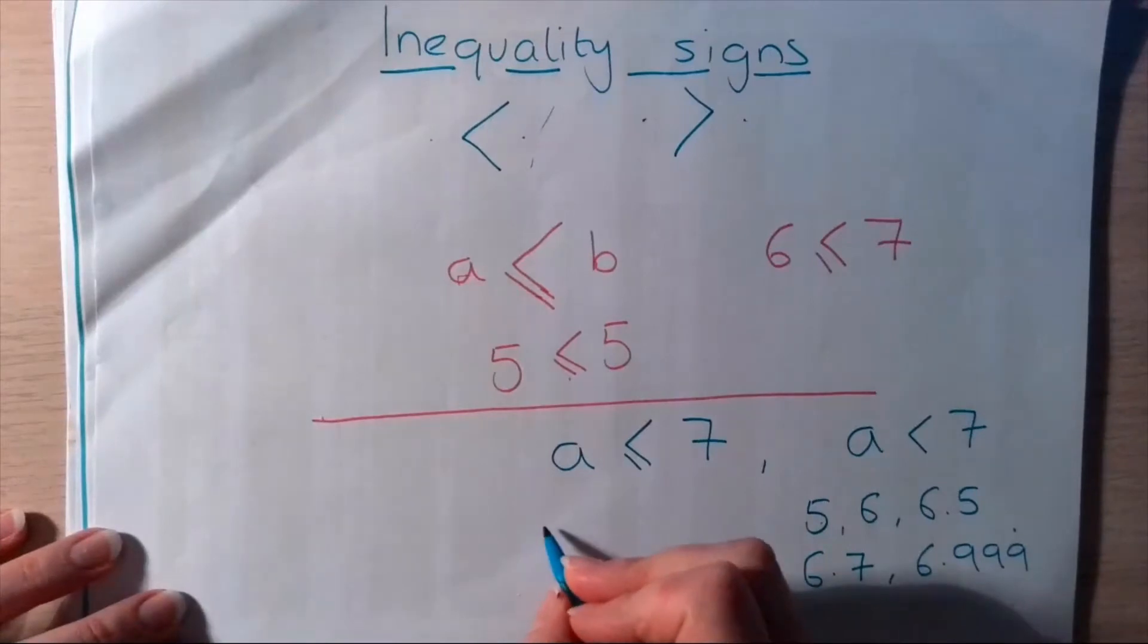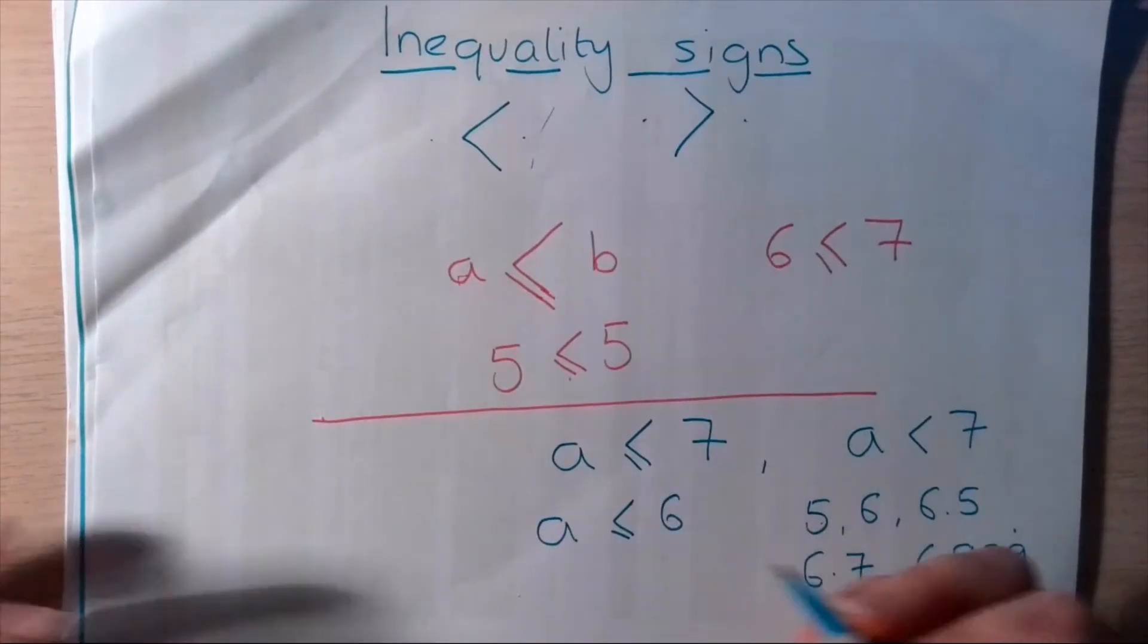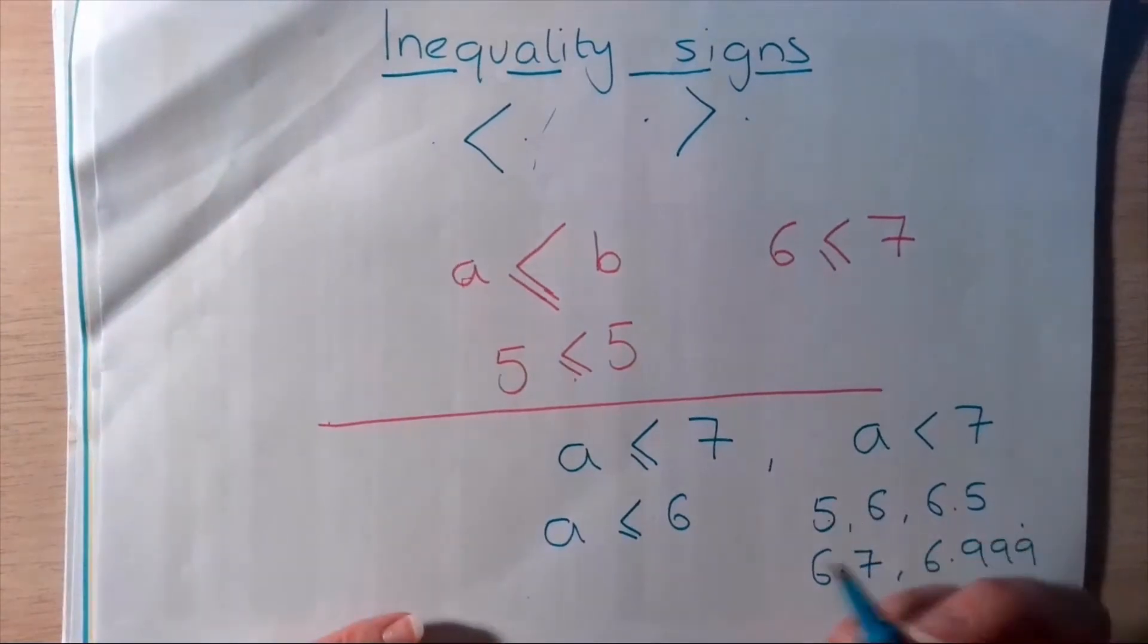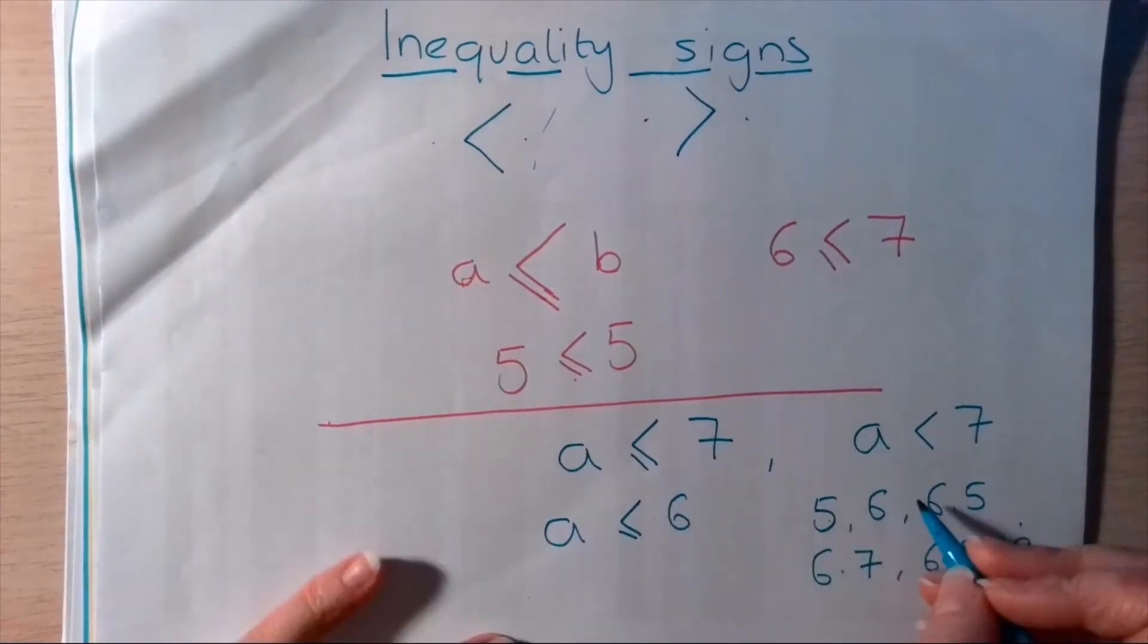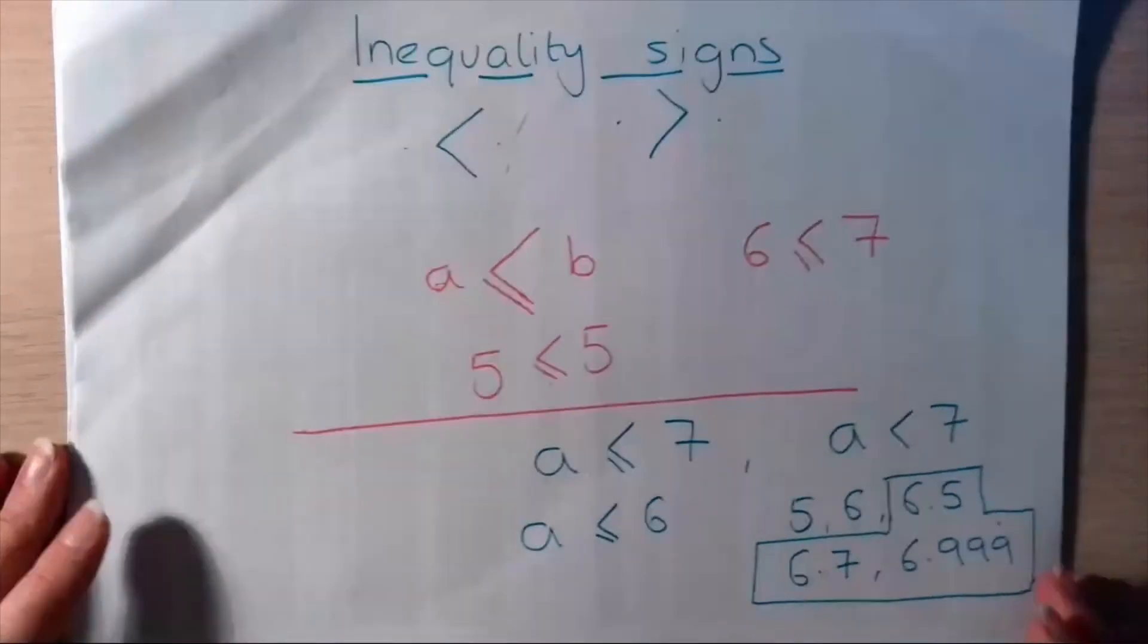Because, of course, if I said a is less than or equal to 6. Well, maybe that solves the problem. It doesn't, because it doesn't include any of these numbers that are between 6 and 7. So, that's those.